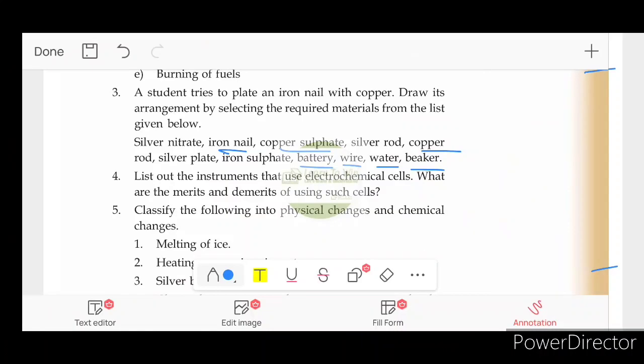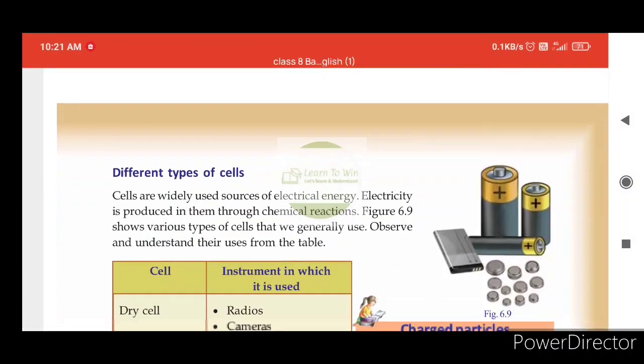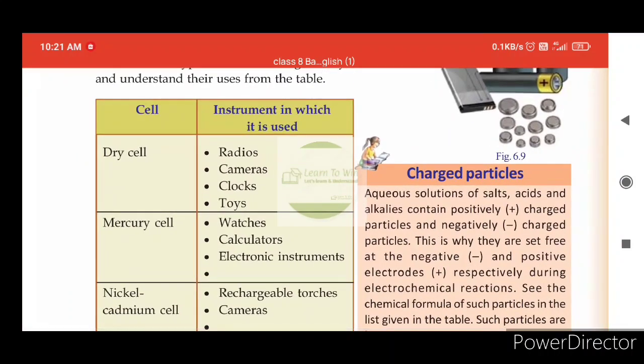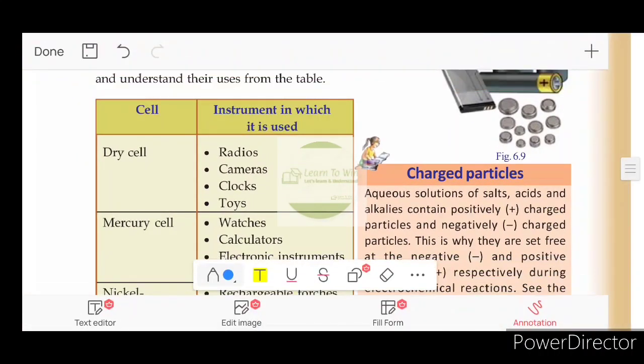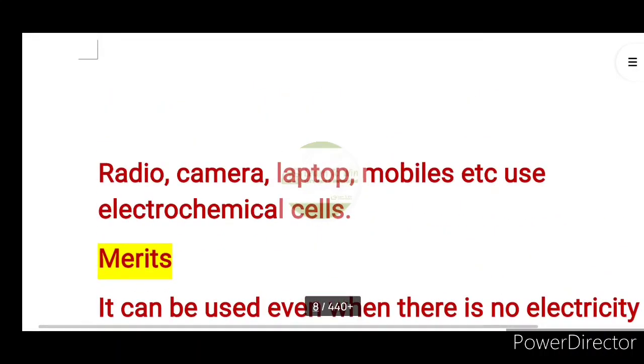List out the instruments that use electrochemical cells. What are the merits and demerits of using such cells? The instruments are electrochemical cells. What are electrochemical cells? The instruments are dry cells, mercury cells. Examples: radio, camera, clocks, toys, laptop, mobiles, torch. Electrochemical cells.